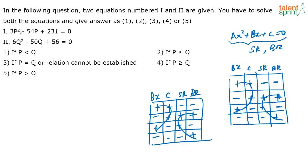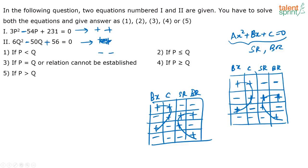For example, take this question: 3p² - 54p + 231 = 0. The symbol before 54 is negative and the symbol before 231 is positive — so minus bx and plus c — meaning both roots of this equation are going to be positive. Similarly, the second equation also has a negative symbol before bx and a positive c, so both its roots will be positive. Using this method, you can directly identify the nature of roots without actually solving the equation.